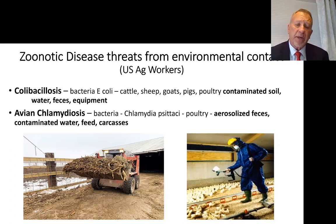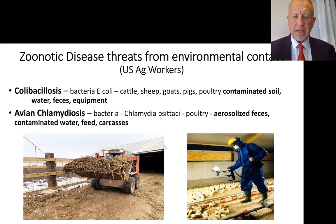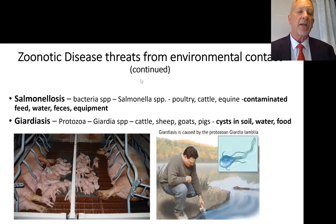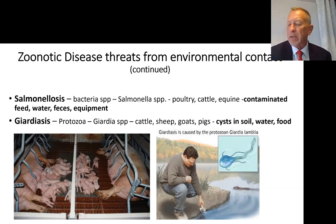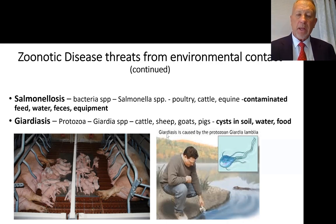E. coli — everyone's heard of that — and it lives in contaminated water, feces, equipment, and soil. Avian chlamydiosis is another bacteria transmitted through aerosolized feces, contaminated water, feed, and carcasses. All of these are why personal protective equipment is so important. Salmonella in pigs and commercial swine can look similar to some foreign animal diseases. Giardia, also known as beaver fever, can persist in contaminated soil and water — that's a protozoan. If you go camping in the mountains, it can persist there too.